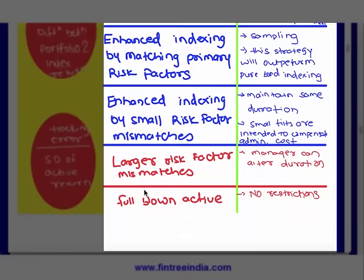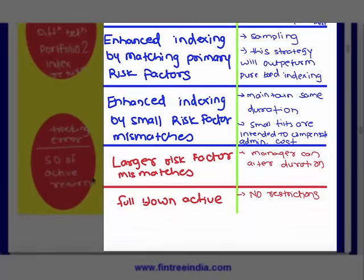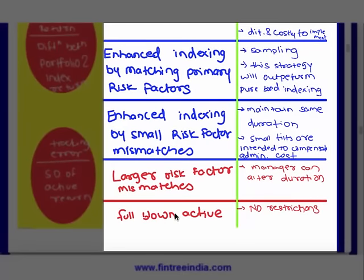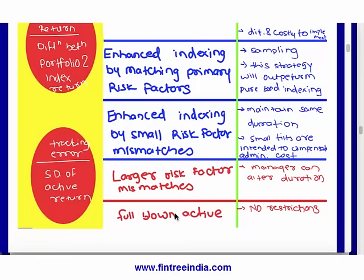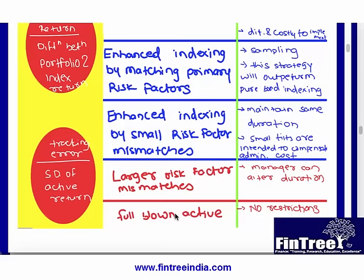There were five strategies: pure bond indexing, enhanced indexing with matching primary risk factors, enhanced indexing with small risk factor mismatches, enhanced indexing with larger risk factor mismatches, and full-blown active. You may encounter a question where you are given a portfolio composition and a benchmark index composition and required to determine which of the five strategies is being followed.